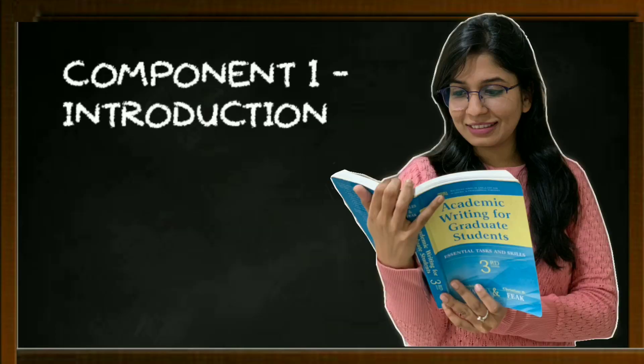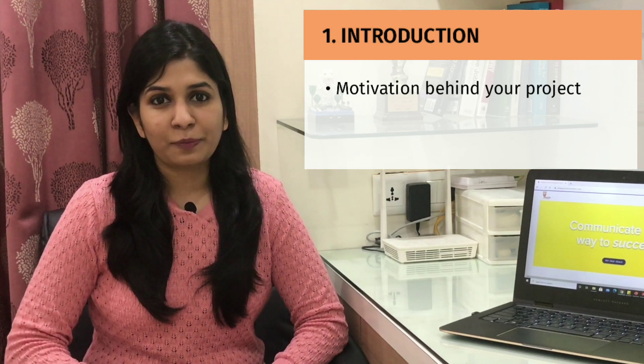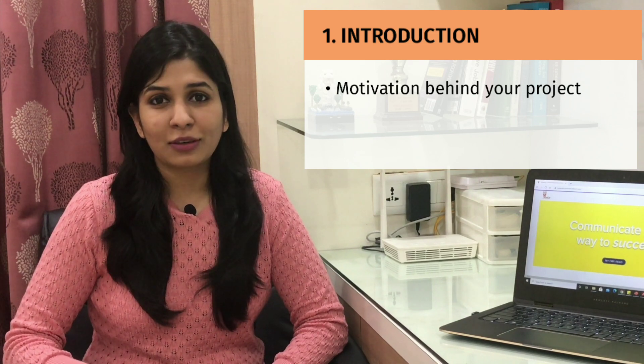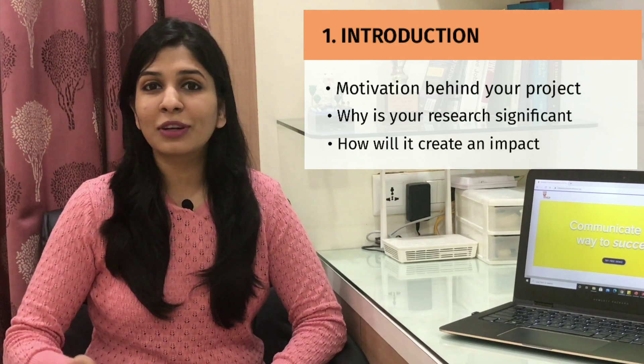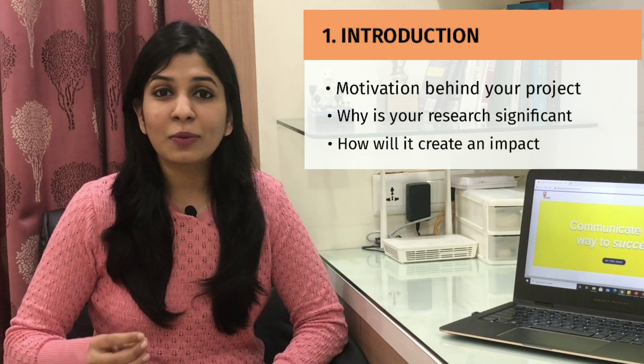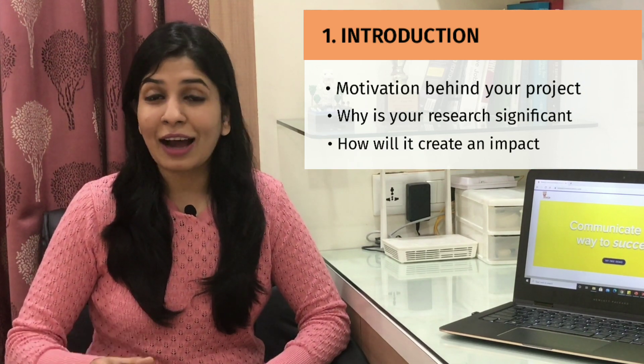Now let's discuss the key components of an abstract. If you're writing a research paper or a project report, ideally your abstract would consist of five components. The first component is the introduction, which includes the motivation or the background for your research. You need to answer: why have you taken up this project, what is the motivation behind it, why is your research significant, and how is it going to create an impact? Explain that in one to two lines at most.